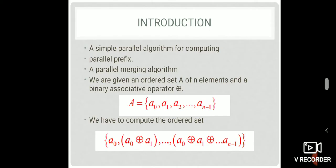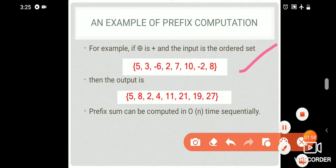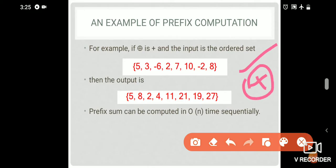Normally we have a prefix computation with one processor. We can do a sequential computation with complexity of order n time. For example, if we add two functions: 5 plus 3 is 8, plus minus 2 is 2. We go left to right operations.